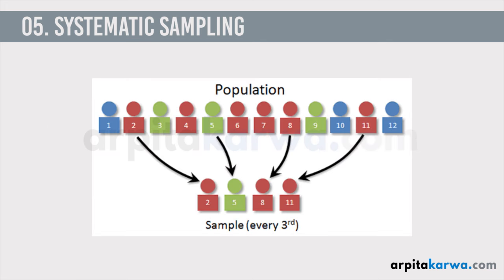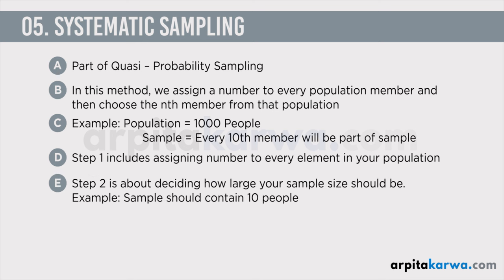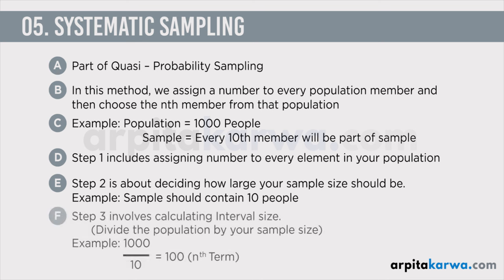The process of systematic sampling has three steps. First, assign a number to every element in your population. Second, decide how large your sample size should be. Third, divide the population by the sample size to find the nth interval. For example, if you have a population of 1000 people and want a sample of 10, you divide 1000 by 10 and get 100 — so every 100th member will be part of your sample: the person at position 100, 200, 300, and so on up to 1000.